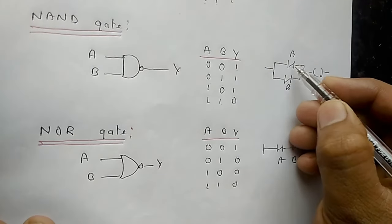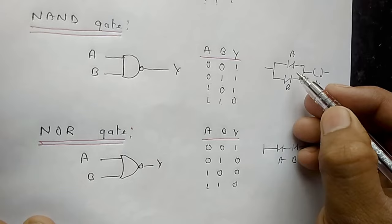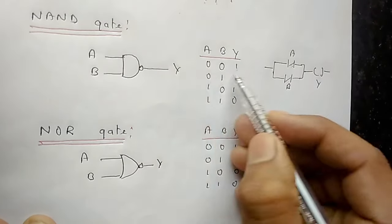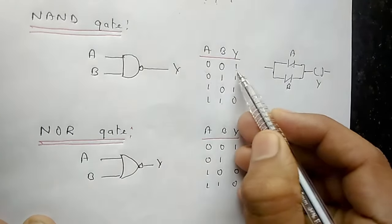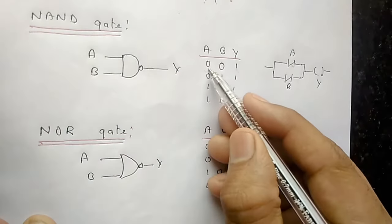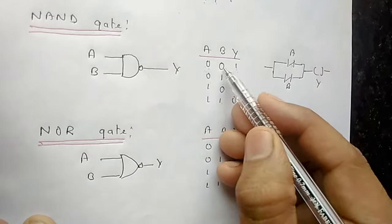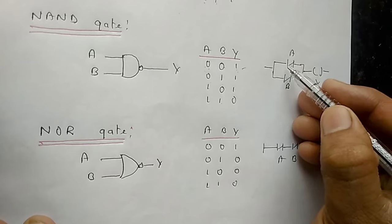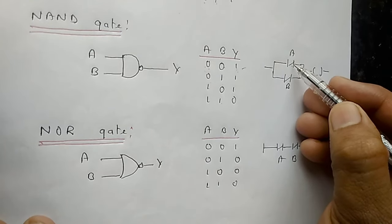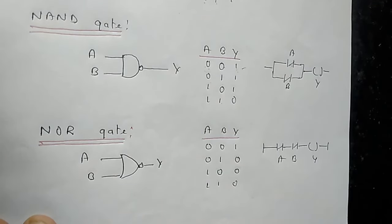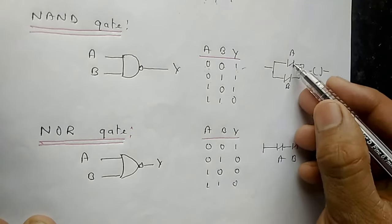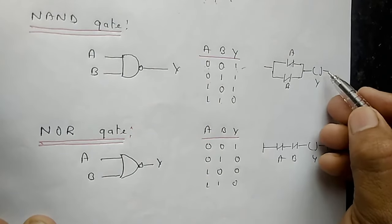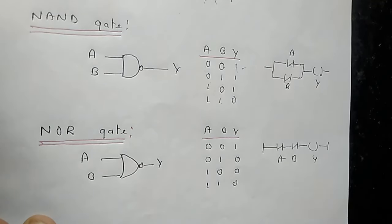Next is the NAND gate. One important point here: we use normally closed contacts. Why? Because there is a condition where if both A and B are false, the output will be true. To deal with this, we put a normally closed input — so if normally closed, the output will be energized.